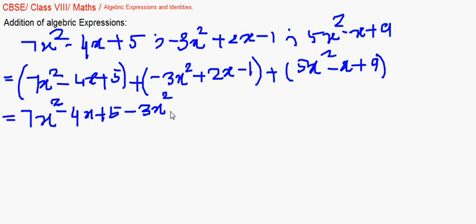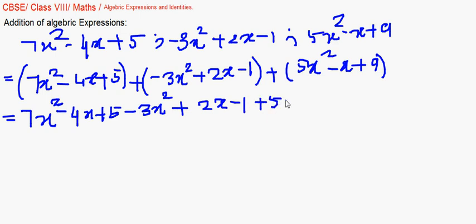We have learned that plus into minus gives us minus, and plus and plus gives us plus, and plus and minus gives us minus 1. Then we have plus 5x² minus x plus 9. Now the next step is to collect all the like terms together.